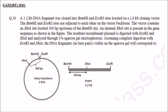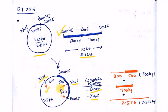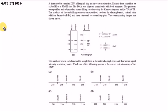This question came in GATE Biotechnology 2016. A vector is ligated with an insert to give recombinant DNA. Complete digestion with EcoRI and XhoI is performed. XhoI has 2 sites and EcoRI has 1 site, for a total of 3 restriction sites, generating 3 fragments. The fragments are: 700 bp, 800 bp, and 2.5 kb.